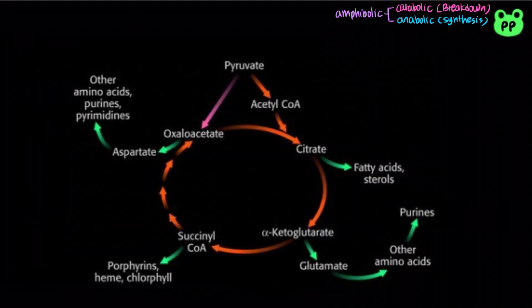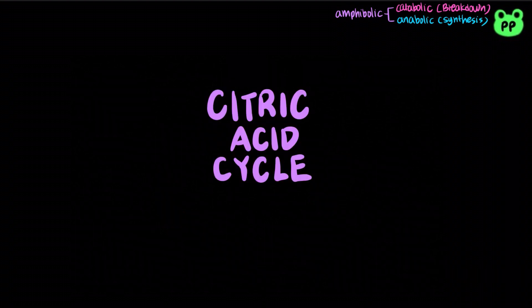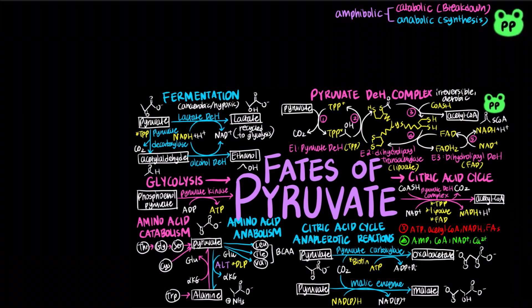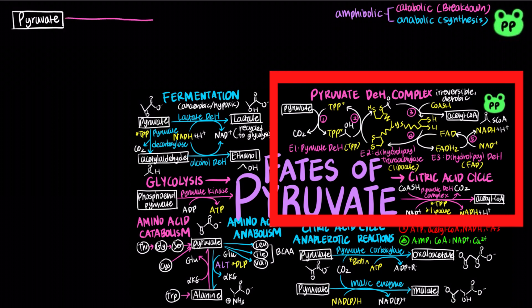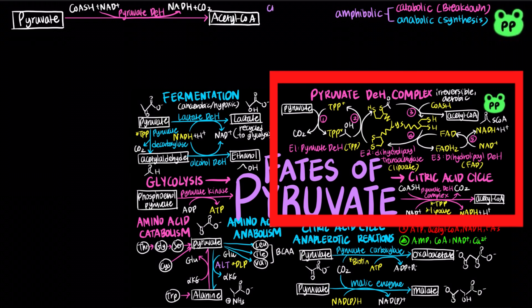The anabolic pathway involving biosynthesis of amino acids from the intermediates of the citric acid cycle will be covered in future videos. The citric acid cycle involves 8 steps. In my previous video titled Fates of Pyruvate, I mentioned that pyruvate dehydrogenase converts the product of glycolysis, pyruvate, into acetyl-CoA, which occurs in the mitochondrial matrix.